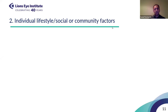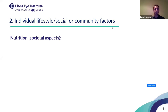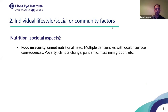The second group of societal factors that can impact ocular surface health are individual lifestyle and social or community factors. Starting with nutrition — though my colleagues will discuss its direct impact on the ocular surface — tonight I'm focused on the societal aspects. Food insecurity is one of the most important societal challenges today. It can be associated with unmet nutritional needs and multiple vitamin and mineral deficiencies, which can have ocular surface consequences. Different factors such as poverty, climate change, pandemics, and mass immigration can cause food insecurity.